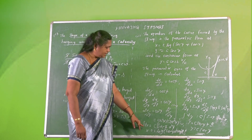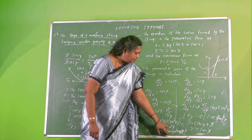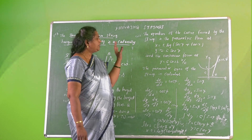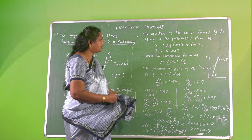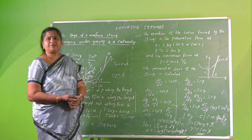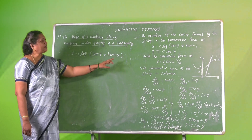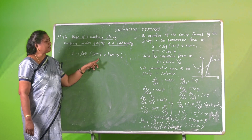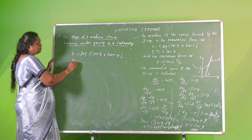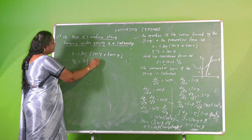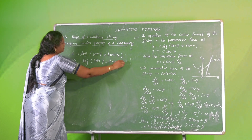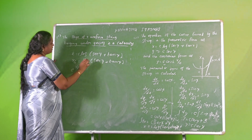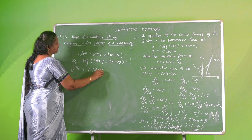The parametric form is: X = C log(sec ψ + tan ψ) and Y = C sec ψ. To derive the Cartesian form Y = C cosh(X/C), we take the parametric equation for X: X/C = log(sec ψ + tan ψ). Taking the exponential of both sides: e^(X/C) = sec ψ + tan ψ.